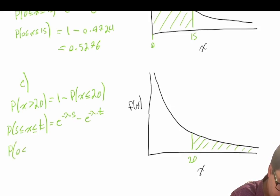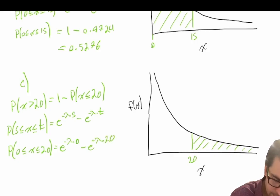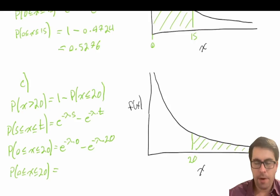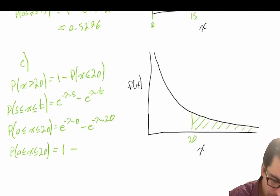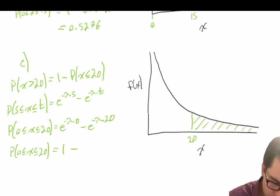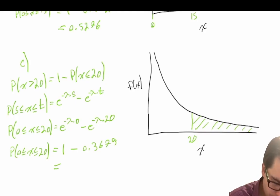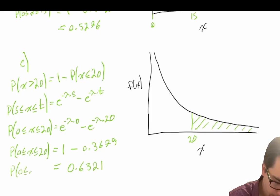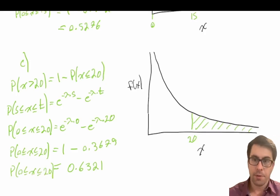So the probability that 0 is less than or equal to x less than or equal to 20 equals e to the power of negative lambda times 0, minus e to the power of negative lambda times 20. We know e to the power of negative lambda times 0 equals 1. Subtracting e to the power of negative 0.05 times 20 gives us 0.3679, and 1 minus 0.3679 equals 0.6321. So the probability that x is less than or equal to 20 is 0.6321.